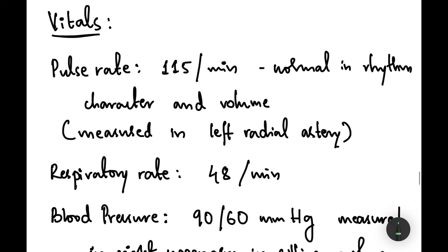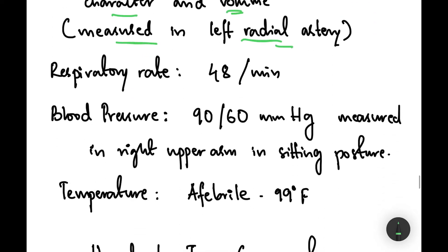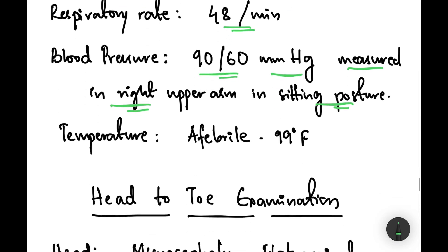The vitals are: pulse rate 115 beats per minute, which was normal in rhythm, character, and volume, measured in the left radial artery. The respiratory rate was 48 per minute. The blood pressure was 90 over 60 mmHg, measured in the right upper arm in sitting position. The temperature was afebrile with 99 degrees Fahrenheit.